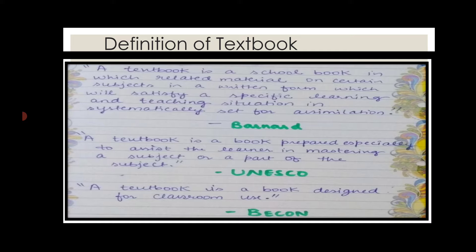Now the definition of a textbook. According to Bernard, a textbook is one in which related material on certain subjects in written form will satisfy a specific learning and teaching situation, systematically set for assimilation. According to UNESCO, a textbook is a specially prepared book which will assist the learner in mastering a subject or a part of the subject. According to Bacon, a textbook is a book designed for classroom use.